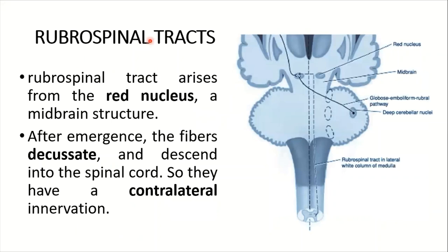The rubrospinal tract arises from the red nucleus, which is a midbrain structure — its afferents and efferents are discussed in detail in the midbrain lecture. As shown in the diagram, the fibers emerge from the red nucleus in the midbrain, decussate crossing to the opposite side, and then descend into the spinal cord.